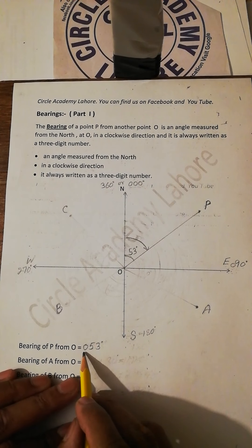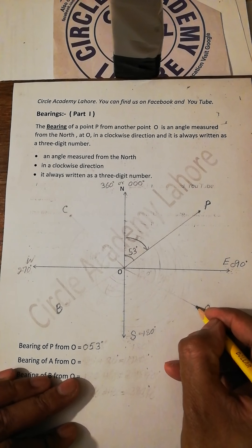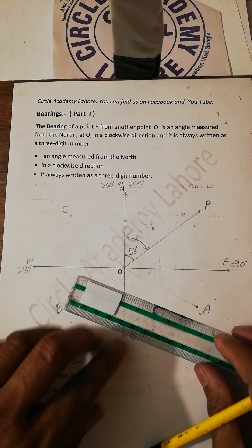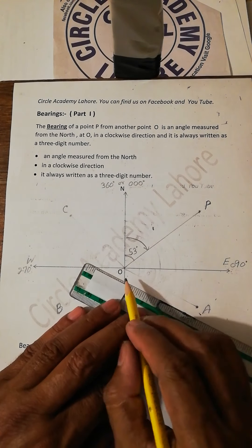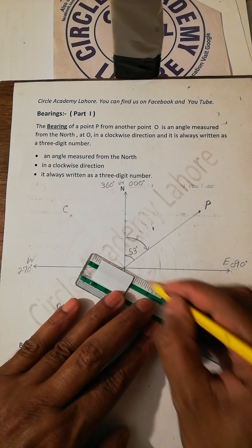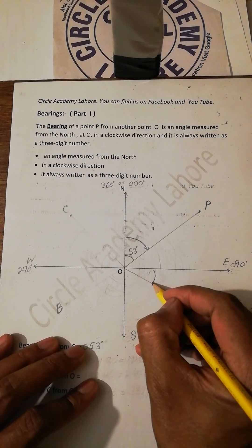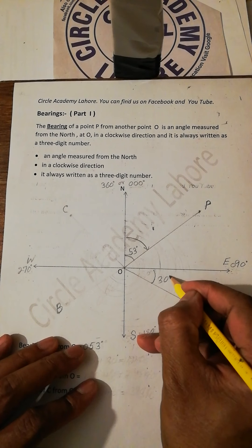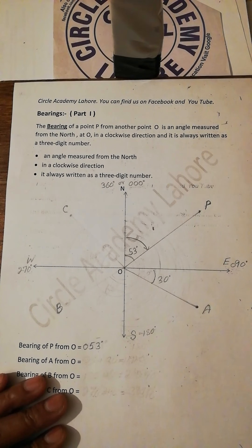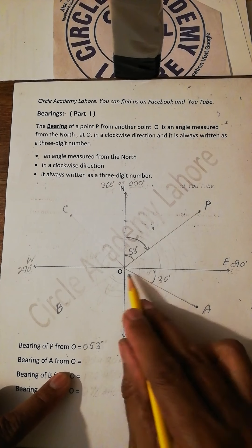The bearing must always be written in three digits. Now let us consider there is another point A. You have to join O and A if it is not already joined. Suppose this angle is 30 degrees.